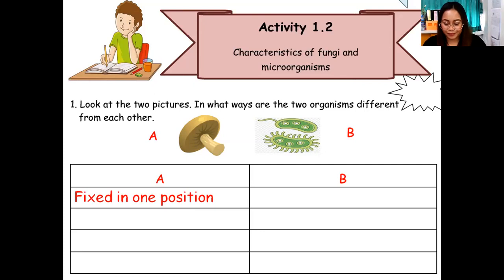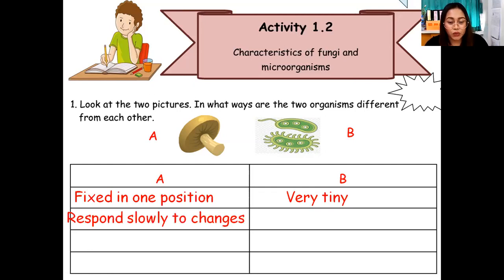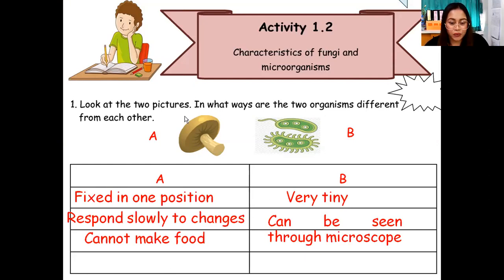How about letter B? Microorganisms are very tiny — correct! Let's go back to letter A. Another characteristic of fungi: responds slowly to changes, same as plants. How about letter B — microorganisms? Can be seen through a microscope. Yes, we use a microscope to see the very tiny microorganisms. Next, another characteristic for fungi: cannot make food. And the last characteristic for fungi: feeds on plants and animals.